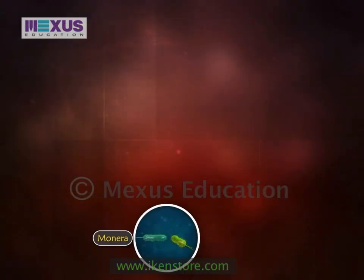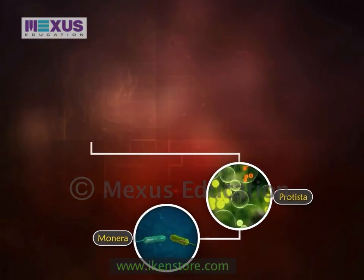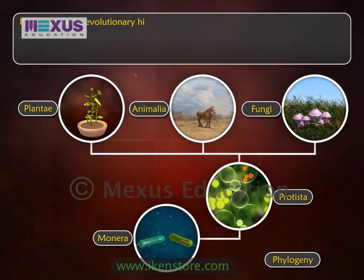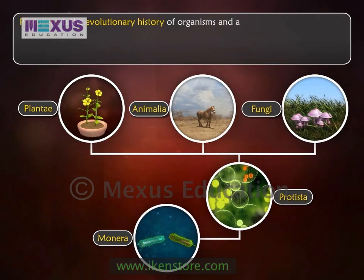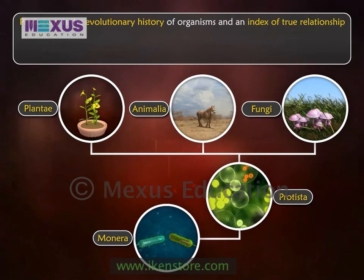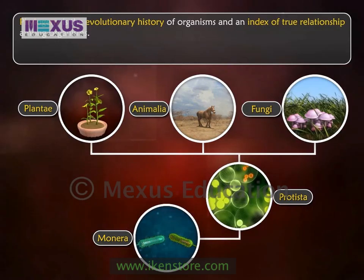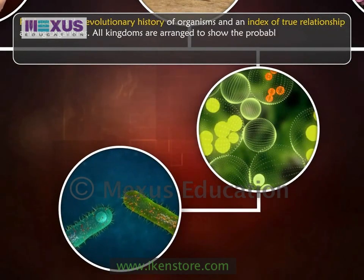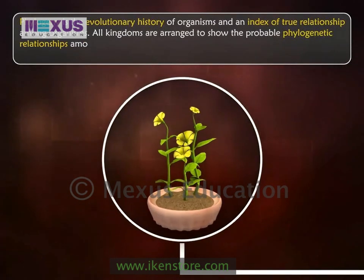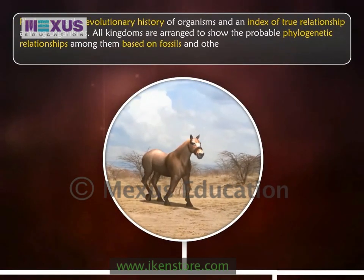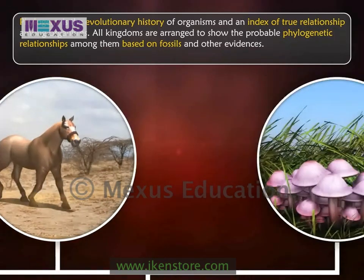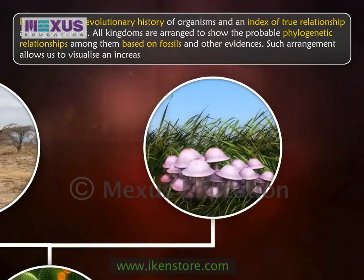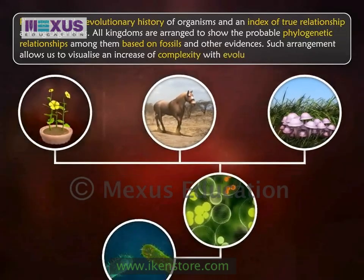The last and fifth factor is the phylogenetic relationship. Phylogeny is the evolutionary history of organisms and an index of true relationship among organisms. All kingdoms are arranged to show the probable phylogenetic relationships among them based on fossils and other evidences. Such arrangement allows us to visualize an increase of complexity with evolutionary time.